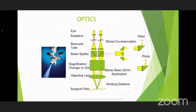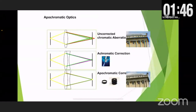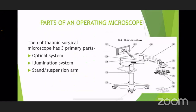The main parts of the operating microscope are the optic cards, the binocular tubes, the beam splitter, the magnification changer, the objective lens, and finally the surgical field. The parts of the operating microscope are basically three: the optical system, the illumination system, and the stand and suspension arm.